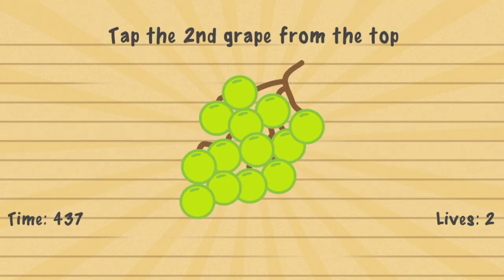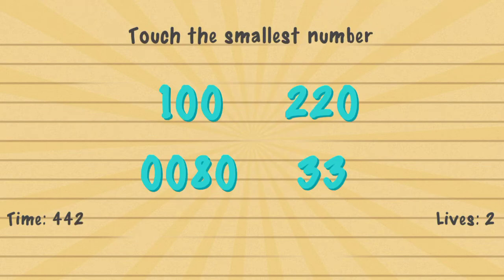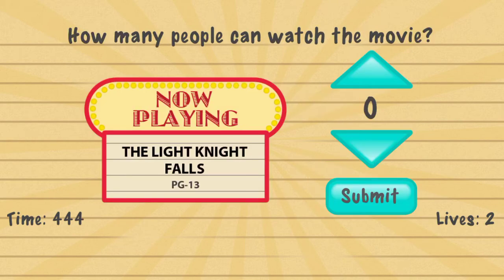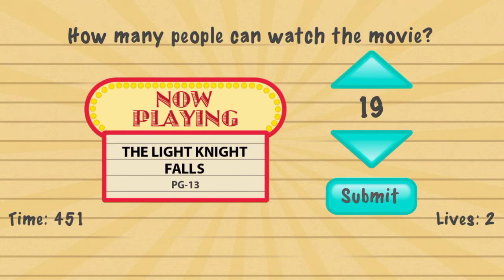Tap the second grade from the top. Touch the smallest number — tap your lives. How many people can watch the movie? This is the amount of tickets you counted — I counted 23.